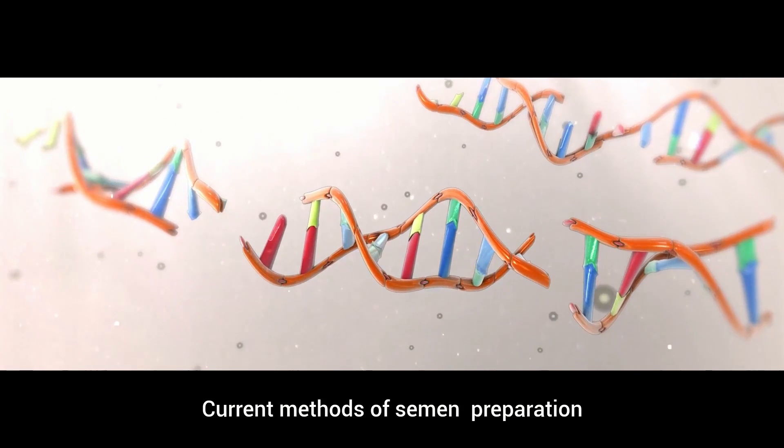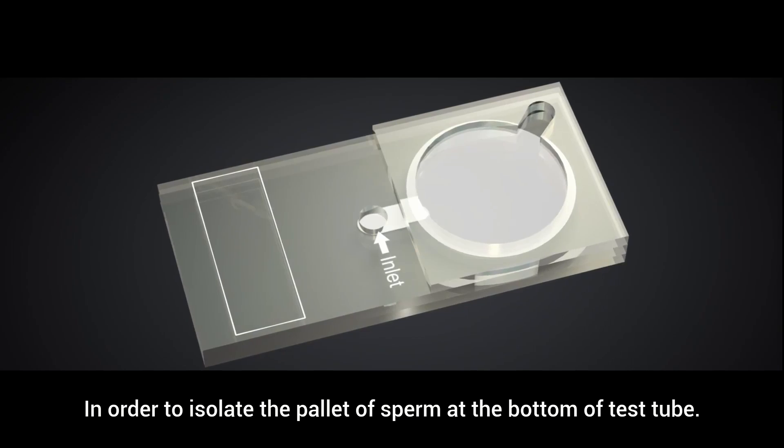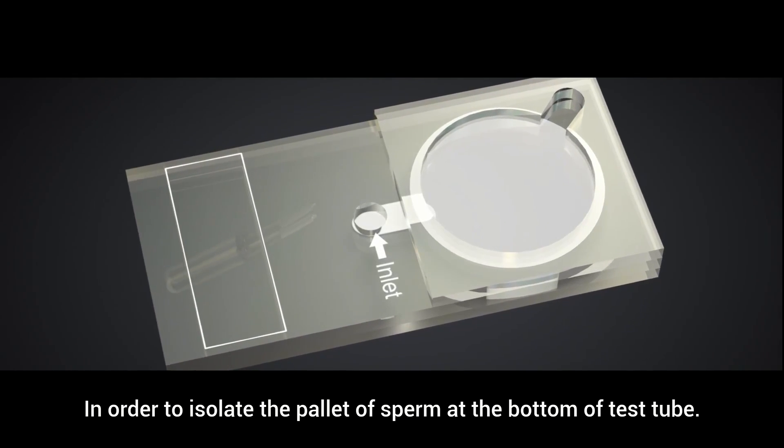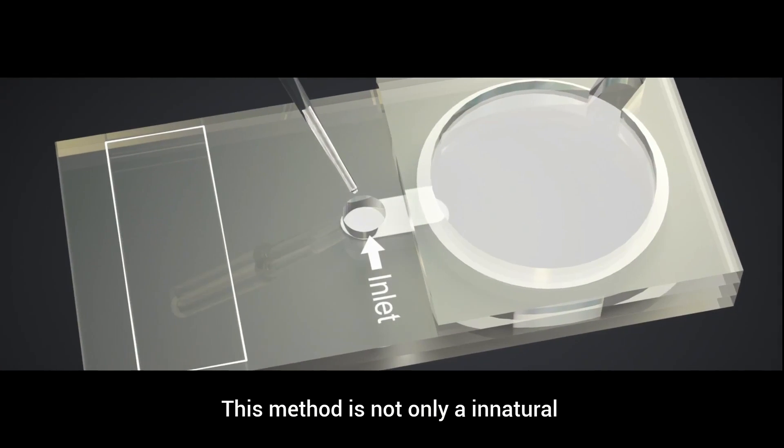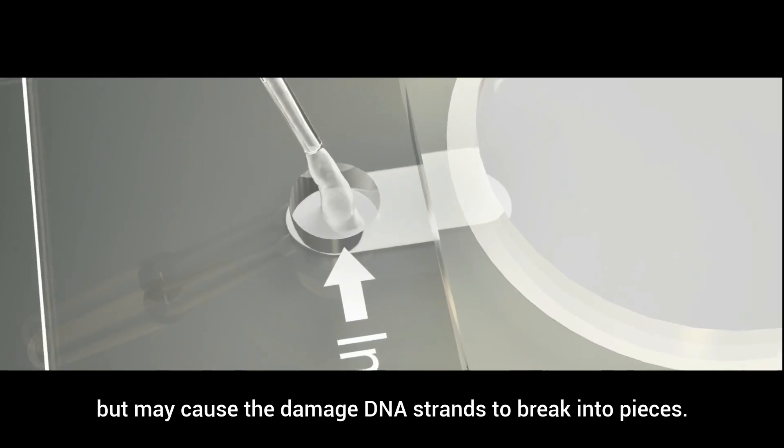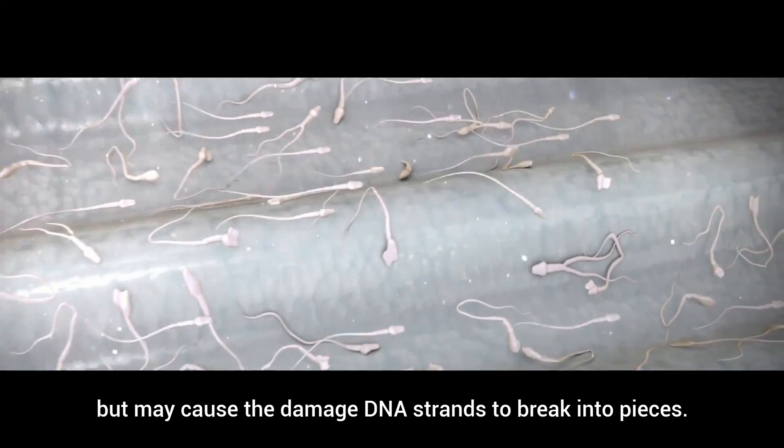Current methods of semen preparation involve high-speed centrifugation of semen in order to isolate the pellet of sperm at the bottom of a test tube. This method is not only unnatural, but may cause the delicate DNA strands to break into pieces.